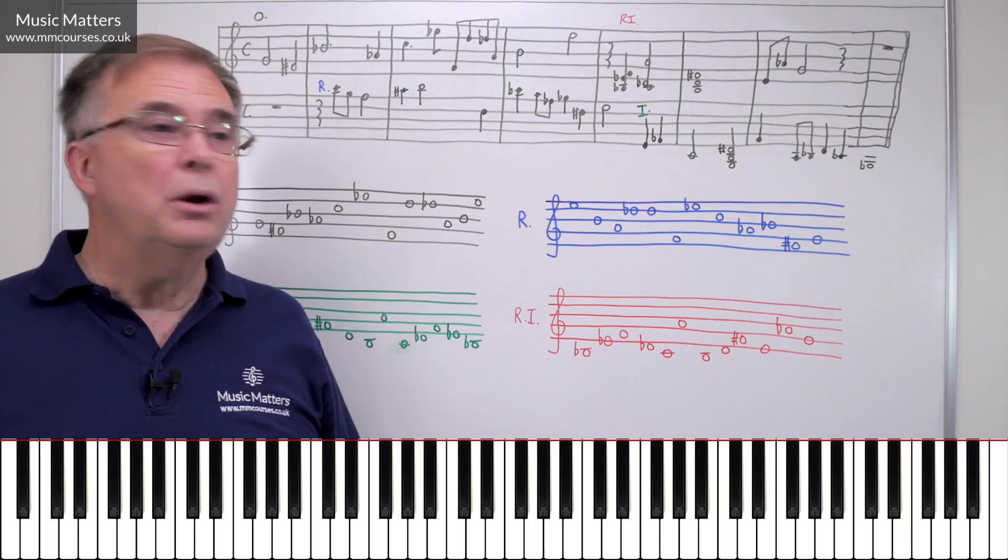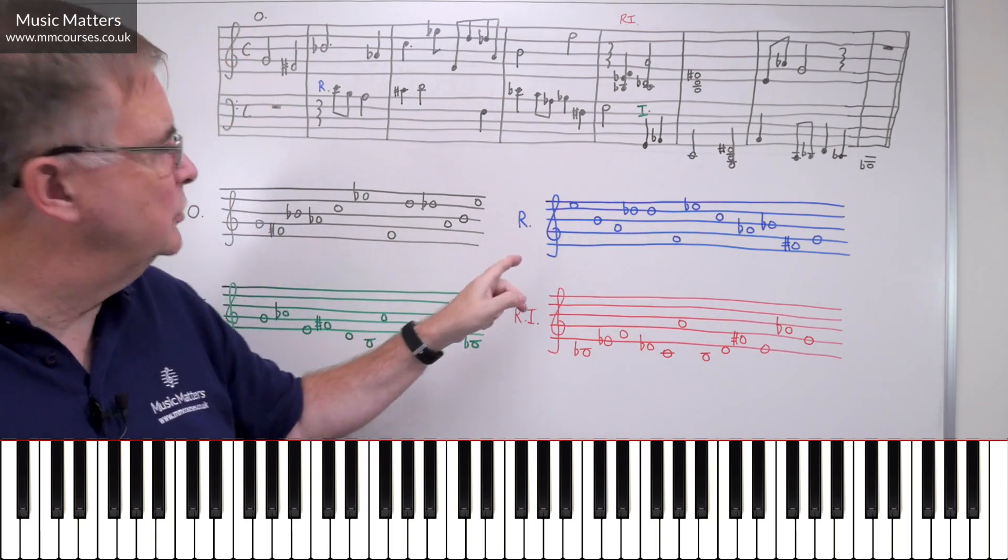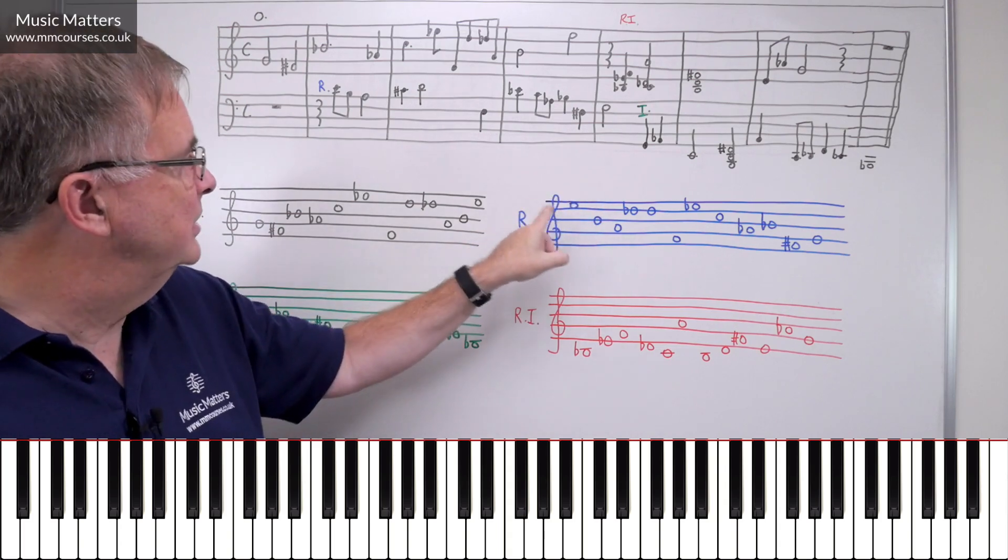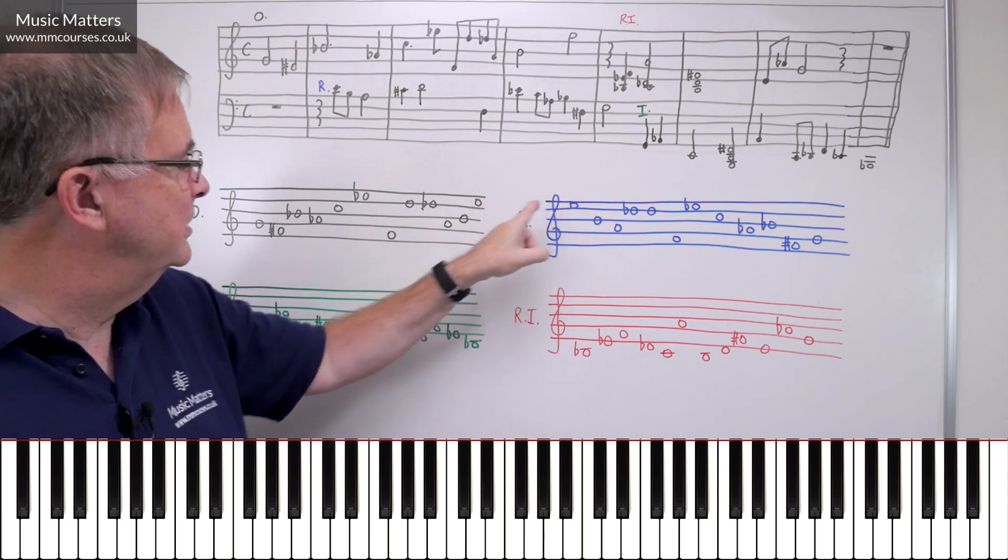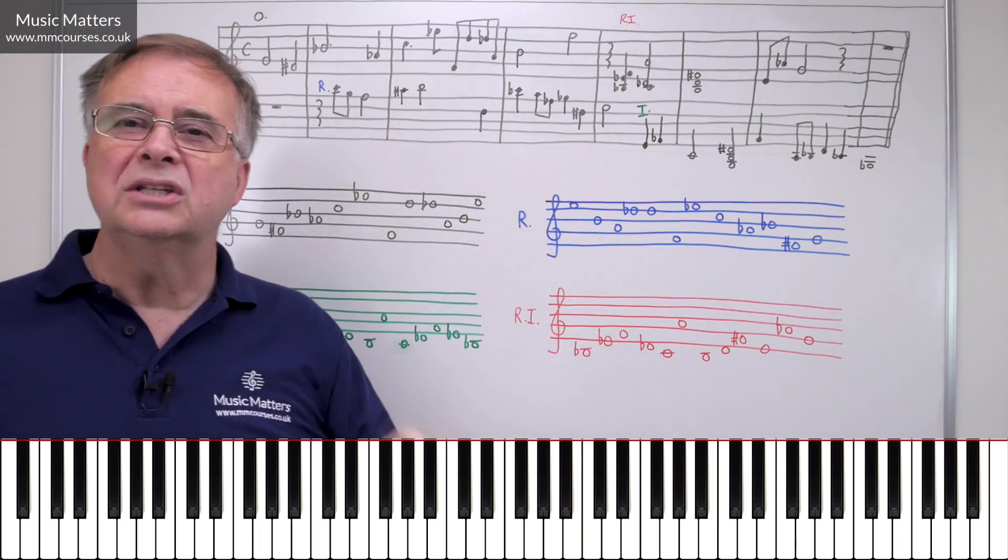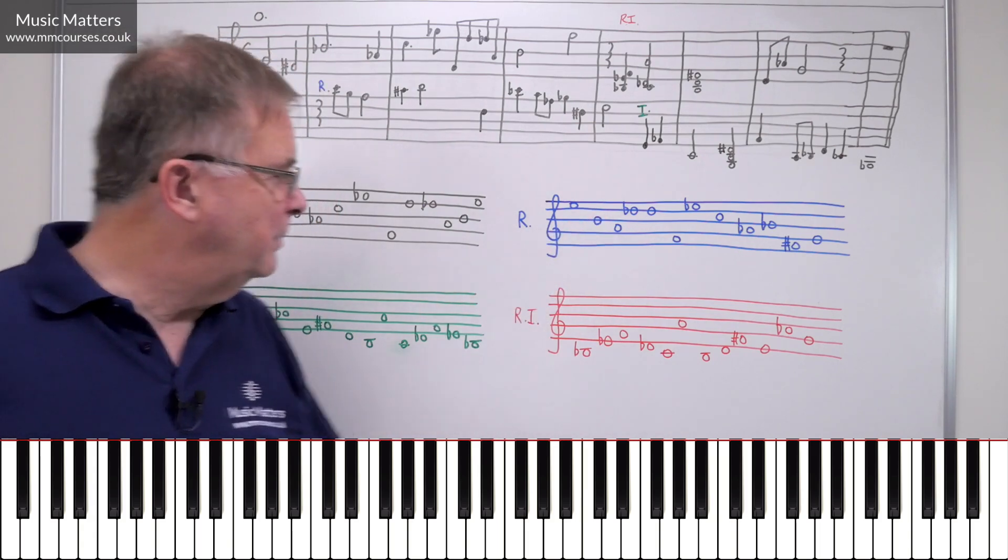In other words, you can do it backwards, which is what this is here. So you see where I've got R for retrograde, R is the original thing backwards. So you see the last note of this is the first note of this, the penultimate note of this is the second note of that, and so on. Okay, so you can use this note row in its original form, or in retrograde, you can use it backwards.